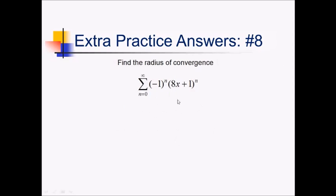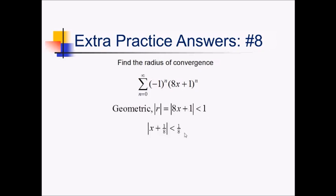For this problem, we want the radius of convergence for this series. I know I'm going to need either the geometric series test or ratio test — I'll have to set up an absolute value of something and set it less than 1. I notice this is a geometric series, and the absolute value of the common ratio is just |8x + 1|. So I'm going to let that be less than 1. To get the radius of convergence I need it in the form |x ± something|, so I divide everything by 8: |x + 1/8| < 1/8. The radius of convergence is therefore 1/8.